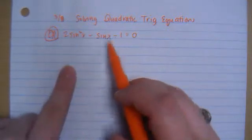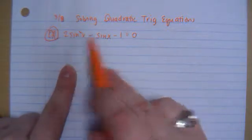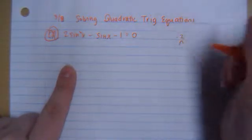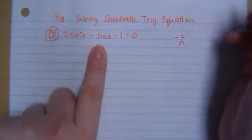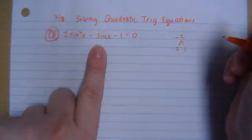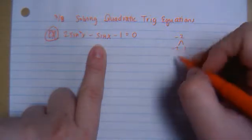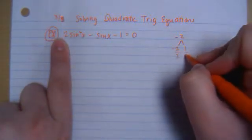So what multiplies to be negative 2, because we have to do my father drives our mistake, so 2 times negative 1, but adds to be negative 1. That would be 2 and 1. The 2 is negative. Then divide by your a, so that's 2.